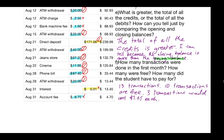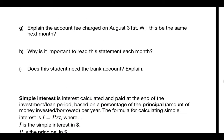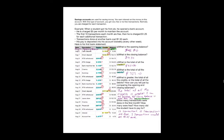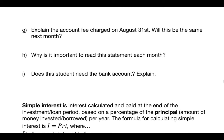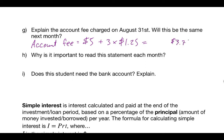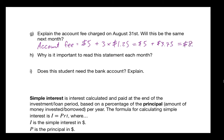The next question is: explain the account fee charged on August 31st — that $8.75 fee. The reason is the account fee is $5, which covers the 10 transactions. But then there were 3 additional transactions at $1.25 each — that's $3.75 — which is in addition to the $5 fee for the month. So the total is $8.75.